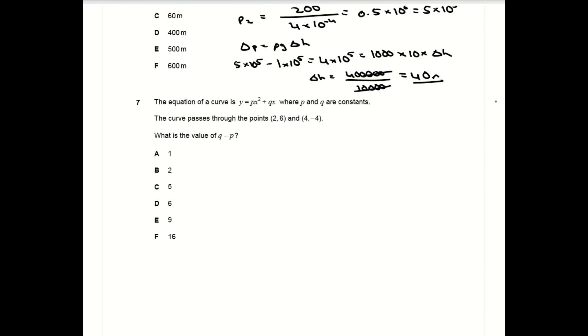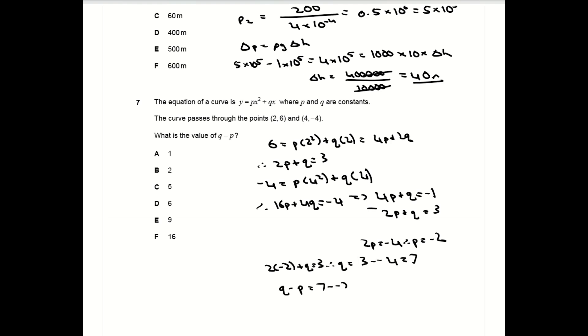Question seven is a straightforward simultaneous equations question. You've been given two points and what you do is substitute the x and y values of those two points into the equation of the curve to get two equations in terms of p and q. You can then solve those equations simultaneously to get separate values for p and q and then work out q minus p.